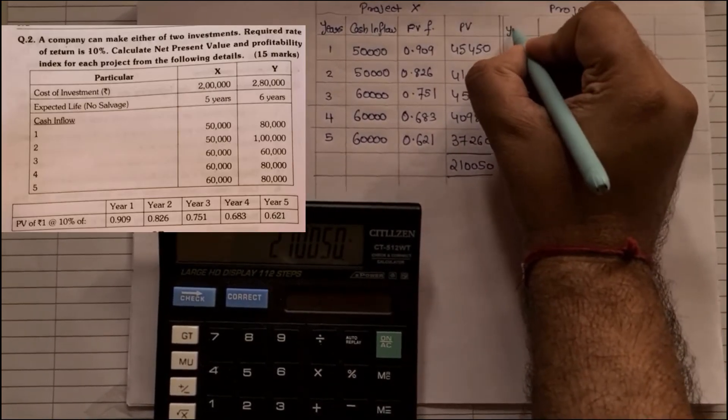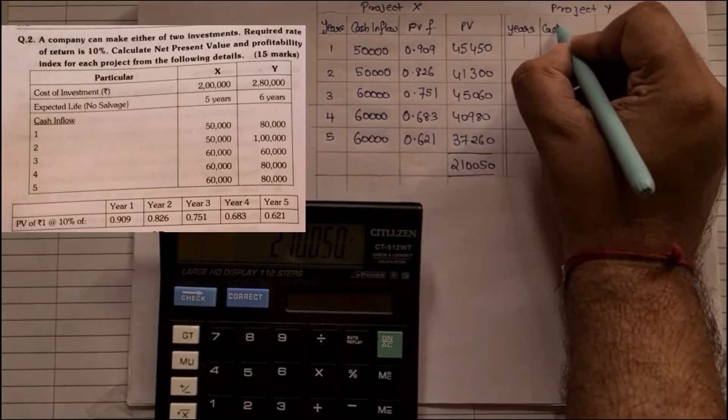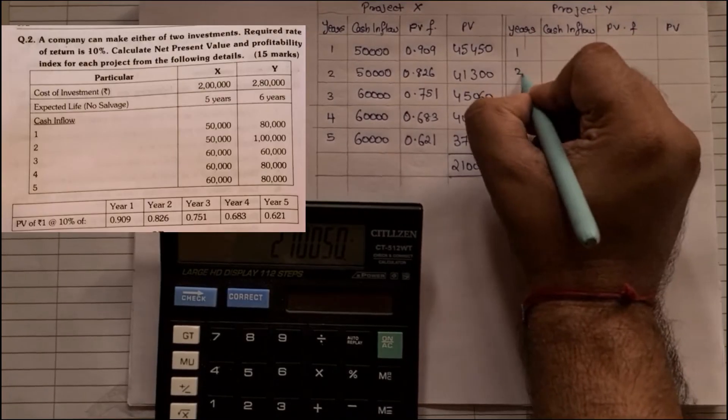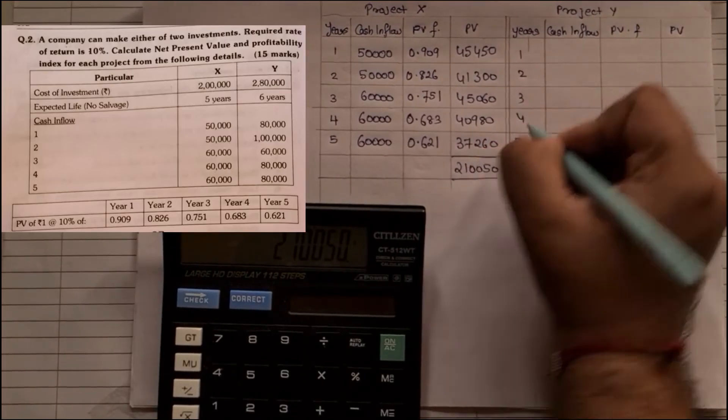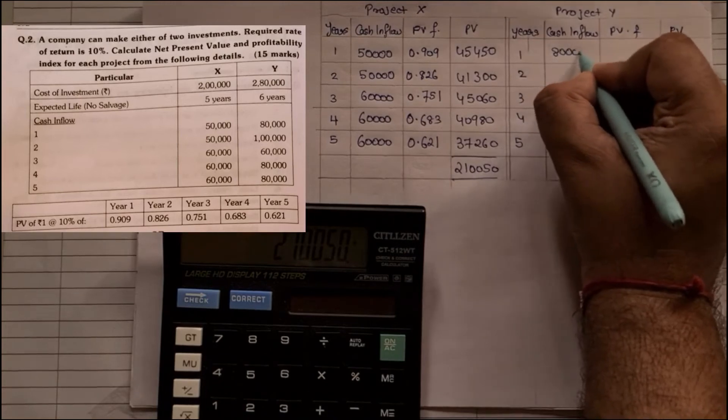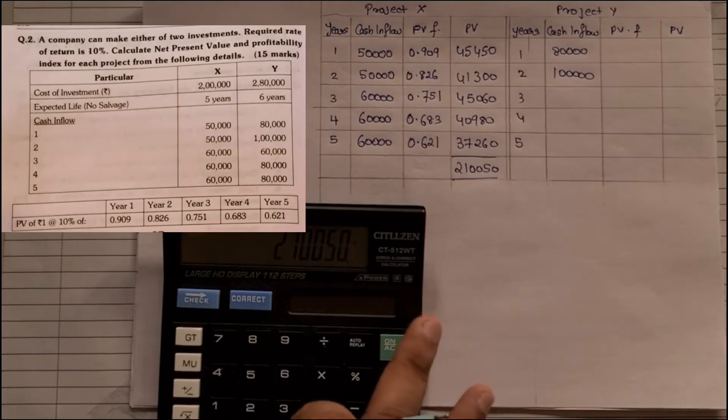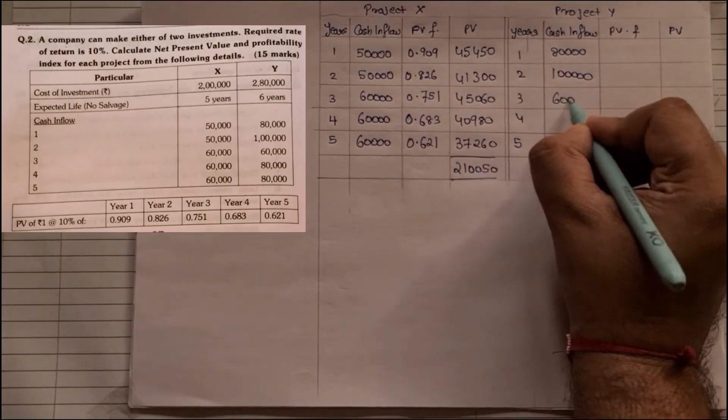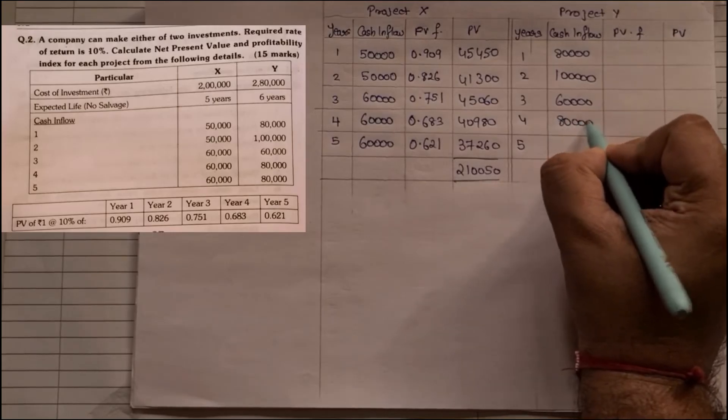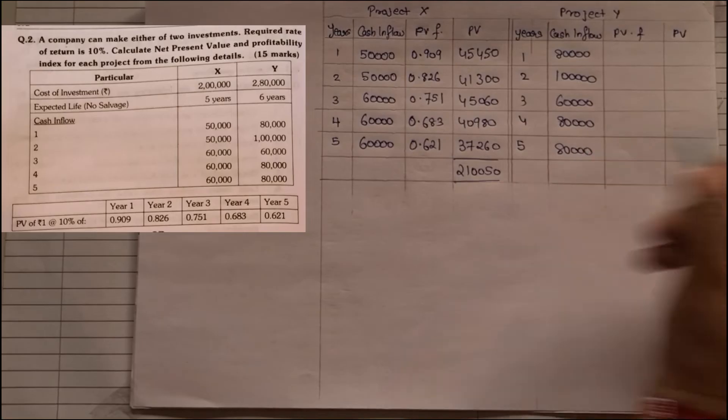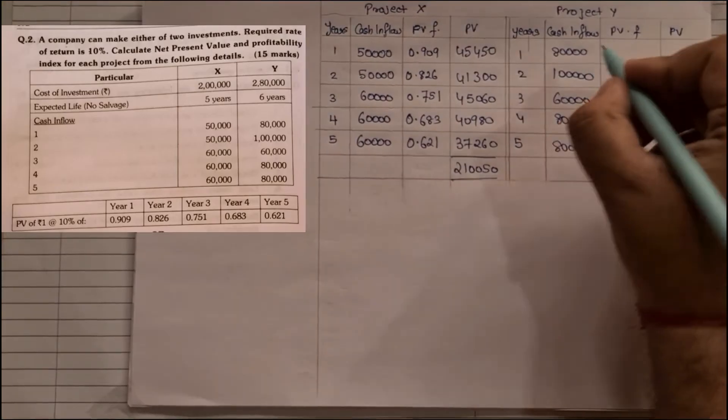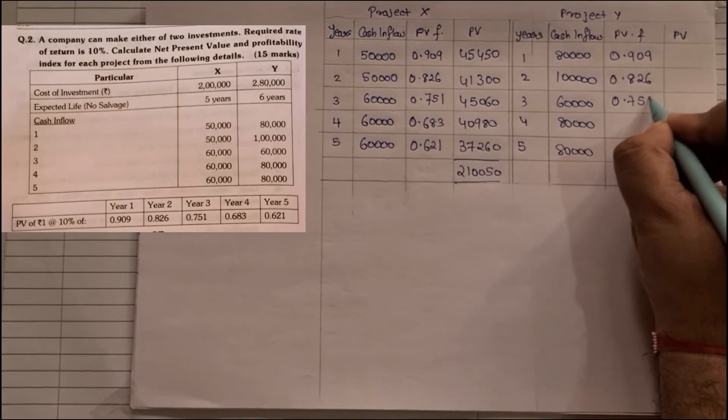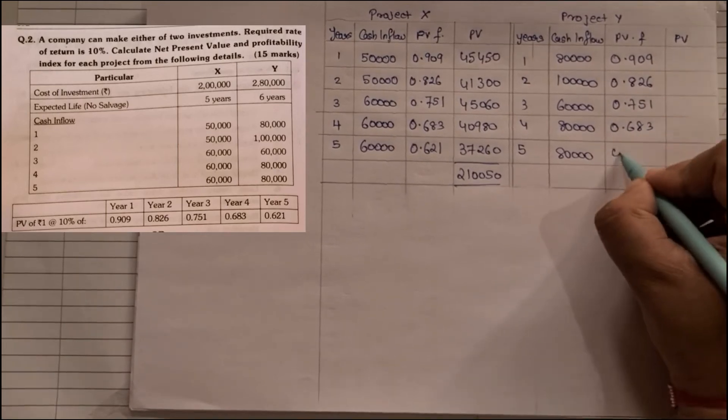Now the same thing we will do for project Y. So we have years, cash inflow, PV factor, and PV. Years again, cash inflows they are given for five years: 1, 2, 3, 4, and 5. The inflows are 80,000, one lakh, 60,000, 80,000, and another 80,000. The PV factors are 0.909, 0.826, 0.751, 0.683, and 0.621.